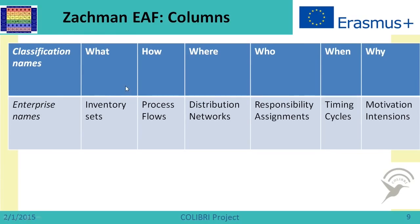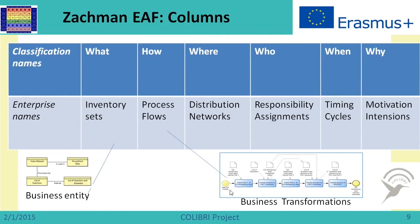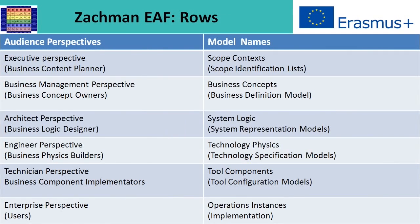At the Enterprise level these can be inventory sets, process flows, distribution networks, responsibility assignments, timing cycles, and motivation intentions. If we want to place business entities or information units, they go under 'what.' Process descriptions go under 'how,' where process flows are located. In the architecture, these entities will be called business entities and the processes will be called business transformations. ZACHMAN also has different perspectives corresponding to common enterprise roles.